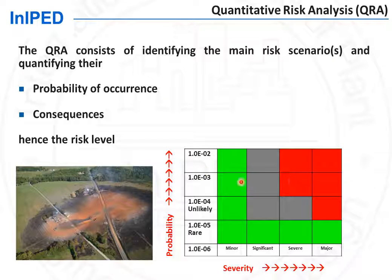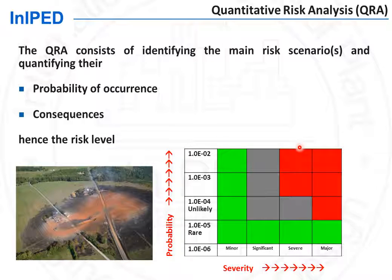If, on the other hand, we are in the green area, no change is necessary. Whereas in the gray area, called the ALARP area — as low as reasonably practicable — the designer must prove that the design includes all reasonably practicable mitigations and safeguards. The risk matrix is the one of the client, the company, the plant owner, or in some countries the one imposed by the authorities.